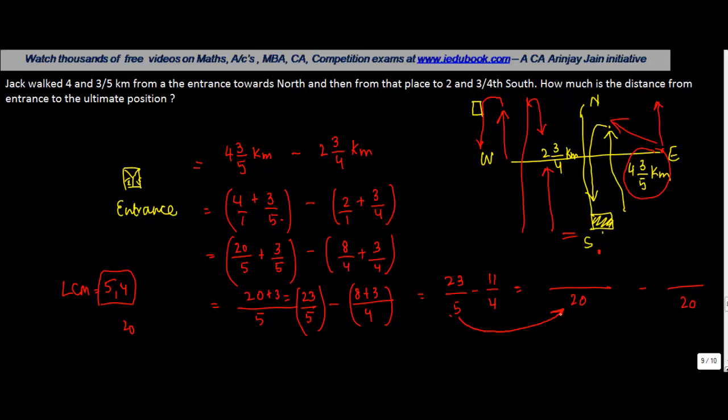Now, 5 goes into 20 how many times? 4 times. So I multiply 23 by 4 as well, which will give me 92. 4 will go into 20 how many times? 5 times. I multiply 11 with 5 and this will give me 55.